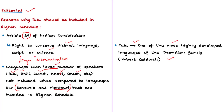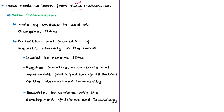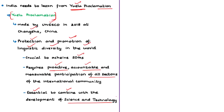Finally, the author says that India needs to learn from the Yulu Proclamation, which was made by UNESCO in 2018 at Changsha in China. This proclamation is regarding the protection and promotion of linguistic diversity in the world. The Yulu Proclamation recognized that protection and promotion of linguistic diversity is crucial for achievement of the Sustainable Development Goals and requires proactive participation of the international community. It also recognized that it is essential to combine protection of linguistic diversity with the development of science and technology. Therefore, Tulu and other deserving languages should be included in the Eighth Schedule, which will promote social inclusion and national integration.